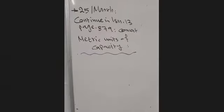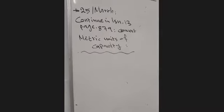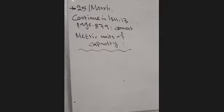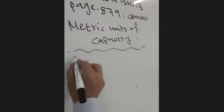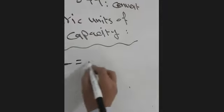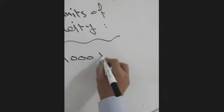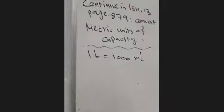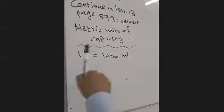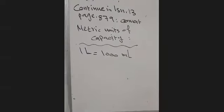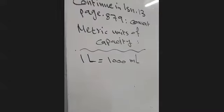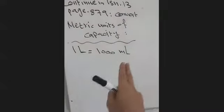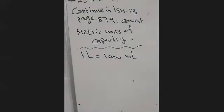In the previous lesson, we said the metric units of capacity are liters and milliliters, and each one liter equals 1,000 milliliters. To turn from liter to milliliter, we multiply by 1,000. To turn from milliliter to liter, we divide by 1,000. Bigger to smaller: multiply. Smaller to bigger: divide, as always.